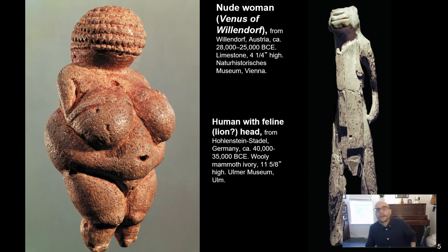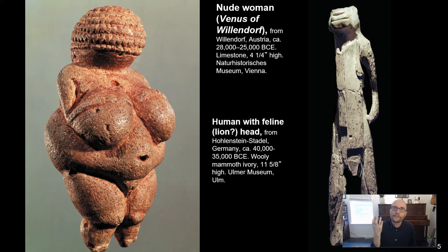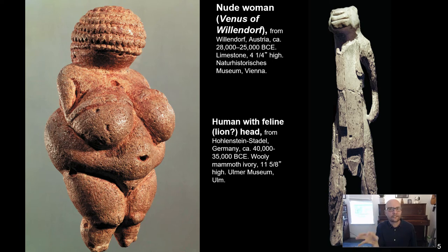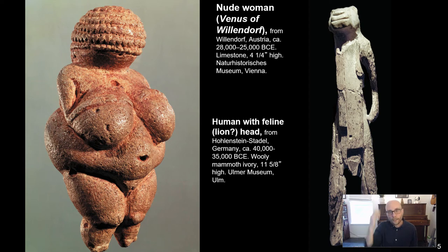On the left we have an image your book labels 'nude woman,' popularly known as the Venus of Willendorf — or sometimes the Woman of Willendorf. Venus is the Roman goddess of love and beauty, but look at the date on this object: it is anywhere between 28,000 to 25,000 BCE. That's incredibly old — 25,000 years before the Romans, who invented the goddess Venus, even existed. So you don't hear the term Venus of Willendorf as much anymore because it assumes too much. It's assuming this is an image of a goddess of love. We don't know that, so the best thing is just to call her the Woman of Willendorf.